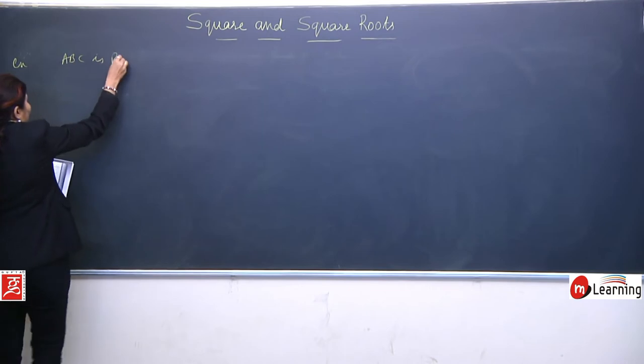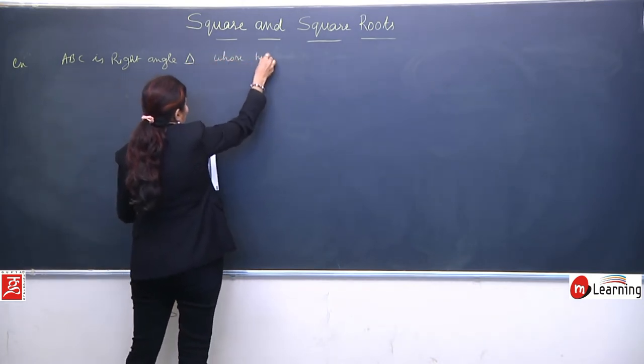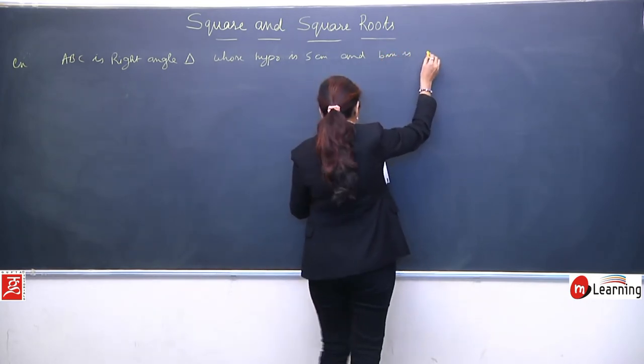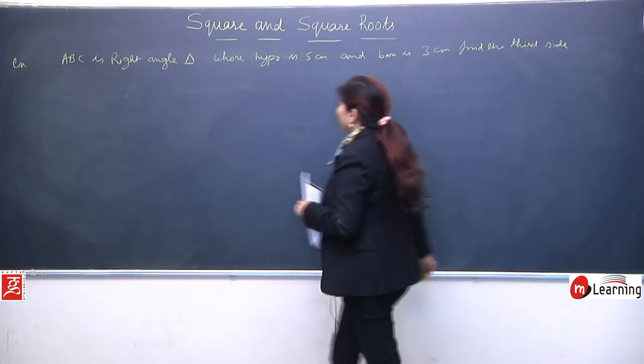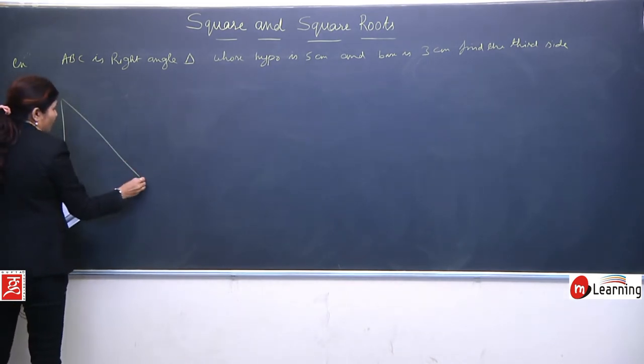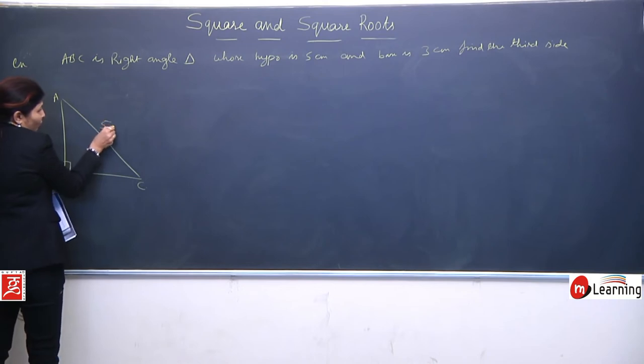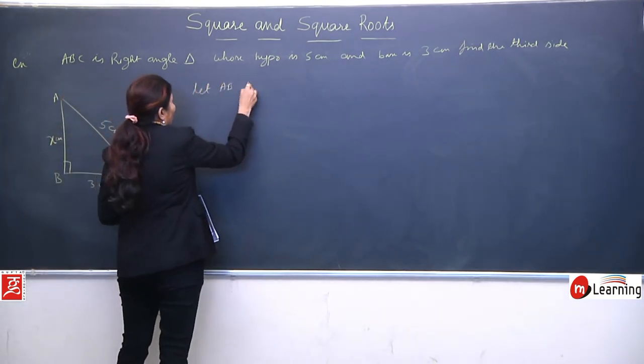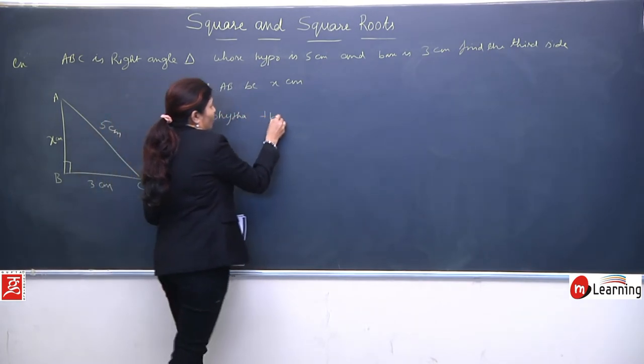ABC is a right angle triangle whose hypotenuse is 5 cm and base is 3 cm. Find the third side. It means this side is not given. So let's assume, let AB be x cm.